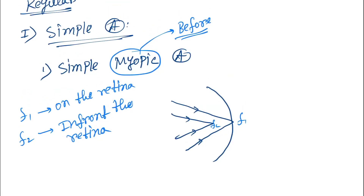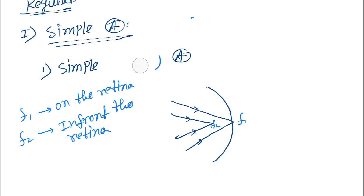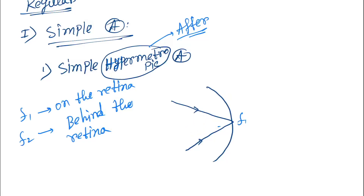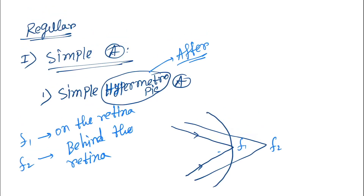In simple hypermetropic astigmatism, one focal point is on the retina and the other (F2) is behind the retina. Next is compound astigmatism, which also has two types: compound myopic and compound hypermetropic.